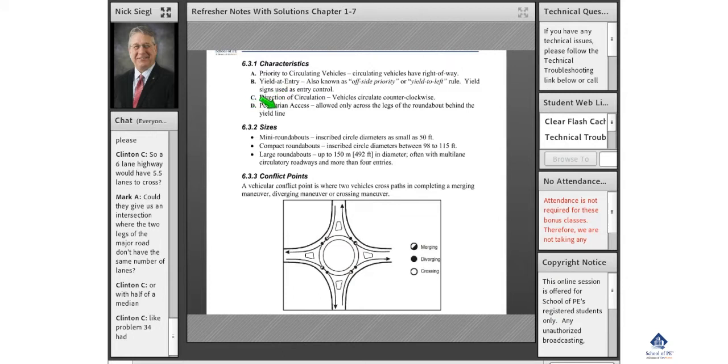Pedestrian access is allowed only across the legs of the roundabout behind the yield line. So pedestrians are required to cross here or here or here or here, but nobody's supposed to be walking across the circle like that.